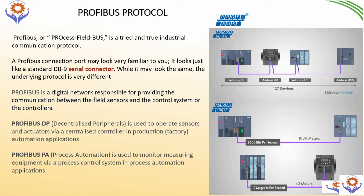PROFIBUS is a digital network responsible for providing communication between sensors, control systems, and controllers. There are two different types: PROFIBUS DP and PROFIBUS PA. PROFIBUS DP (Decentralized Peripherals) is used to operate sensors and actuators via a controller in production or automation applications. PROFIBUS PA is used to monitor equipment via process control systems in process applications. This is the difference between PROFIBUS PA and PROFIBUS DP.